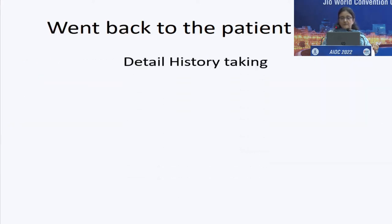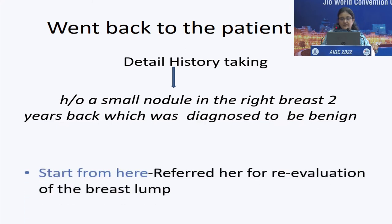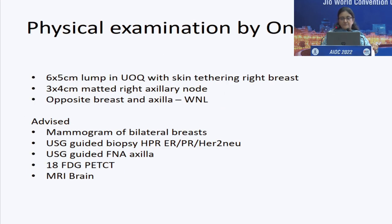We went back and took a detailed history again. She gave history of a small nodule in the right breast two years back which was diagnosed benign. Since we were lost in the diagnosis, we thought let's start from here. We sent her back for re-evaluation of the breast lump.